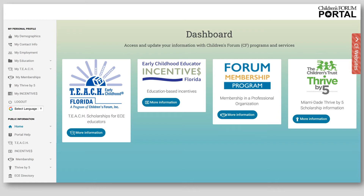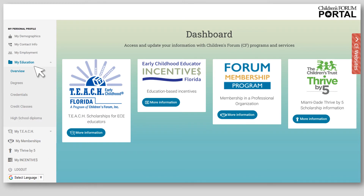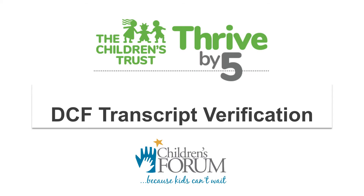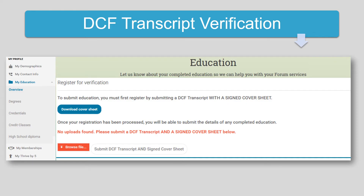Once logged into the personal account, use the left toolbar to update personal demographics and contact information, confirm employment on the My Employment tab, and submit DCF transcript and all required education on the My Education tab. Thrive by Five directors and required staff must submit their DCF transcript for verification annually. This is done on the Overview tab in My Education.